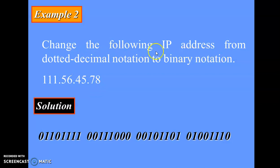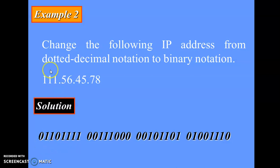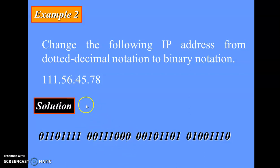Change the following IP Address from dotted decimal notation to binary notation. Here they are asking the reverse way, wherein they have provided you the dotted decimal fashion, and they are asking you to convert it into binary form which is 32 bits long. The first decimal value will give you the first byte of 8 bits, the second decimal value gives the second byte, 56 is the 8-bit binary equivalent, 45 is the third byte binary equivalent, and 78 is the fourth byte binary equivalent.